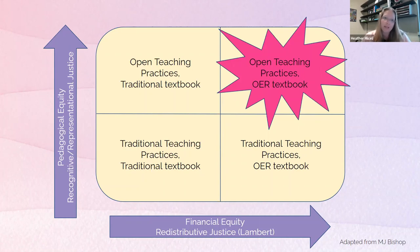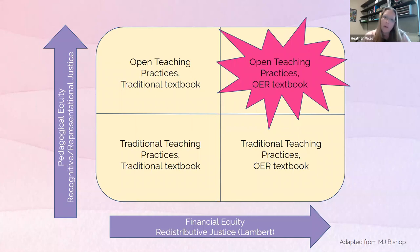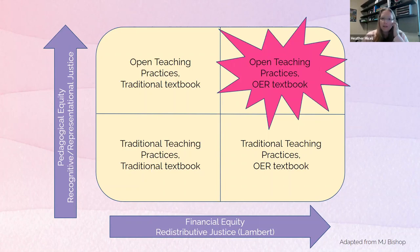I love this matrix because I think open pedagogy and other open educational practices move us beyond just redistributive justice — making sure students can access content — to thinking about recognitive and representational justice: making sure students are exposed to diverse perspectives while allowing their voices to be heard. In doing so, we show we care for our students by valuing their voice and choice. Adopting an open textbook isn't necessarily transformational on its own; we want to see more pedagogical equity by using open teaching practices, and that top right corner is what we shoot for.